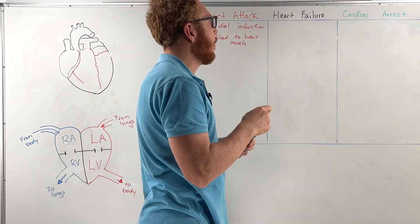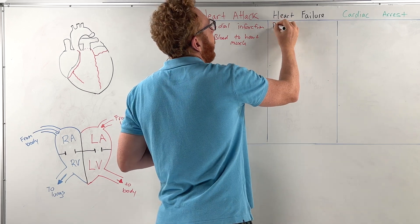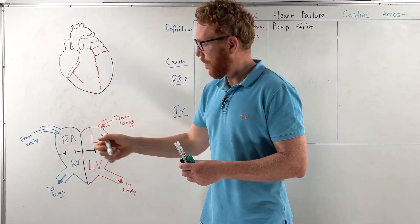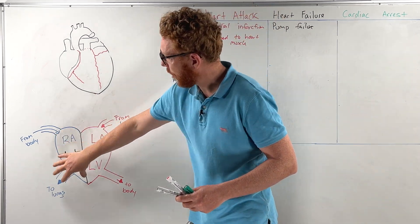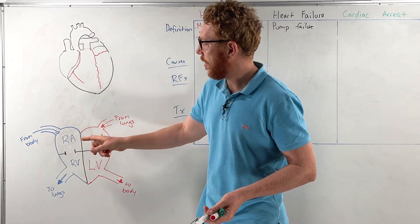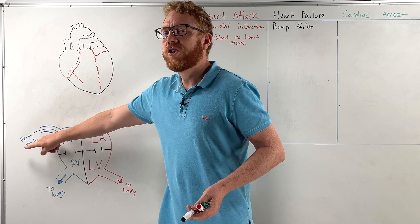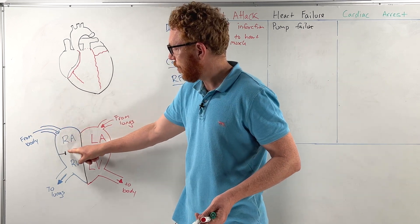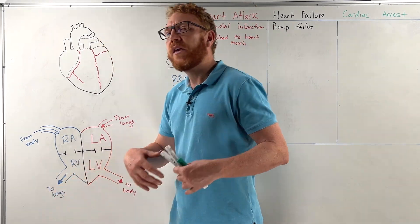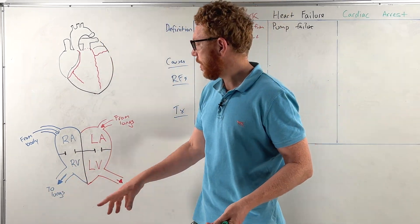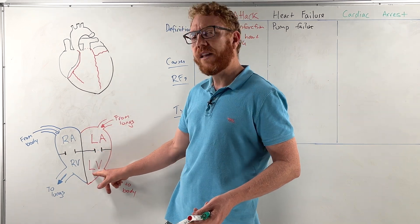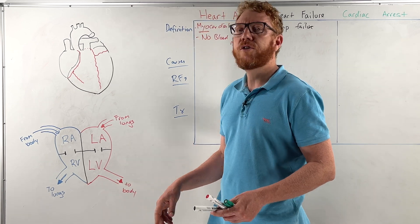Looking at heart failure, this is essentially a pump failure. Over here we've got a diagram of the heart separated in its chambers: right atria, right ventricle, left atria, left ventricle. Blood comes in deoxygenated from the body to the right atrium through a valve into the right ventricle where it's pumped to the lungs, gets oxygen, drops off carbon dioxide, comes back to the left atrium from the lungs through another valve down into the left ventricle where it's then pumped to the body.